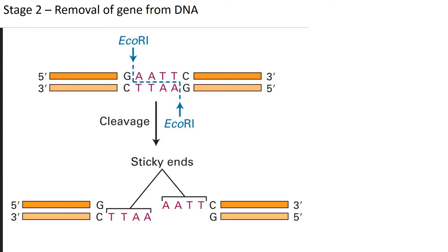Once the restriction enzyme cuts, you get what are called sticky ends. The benefit of this is that if both the recipient DNA and the donor DNA are cut with the same restriction enzyme, the sticky ends of the recipient are going to bond with the sticky ends of the donor fragment when you mix the two together. It's a palindromic sequence — GAATTC, then backwards GAATTC — and this means they're going to stick together.